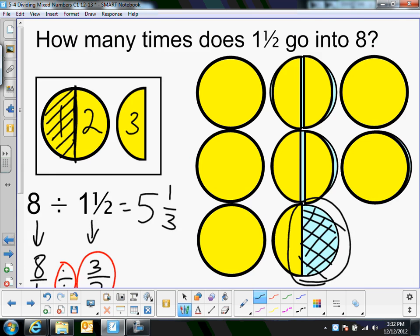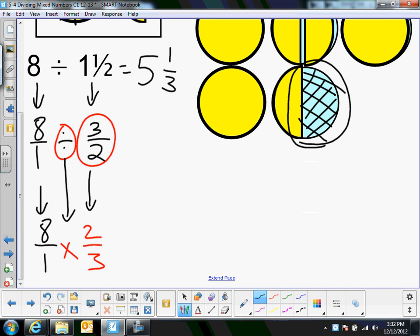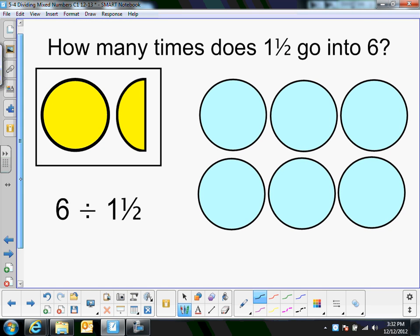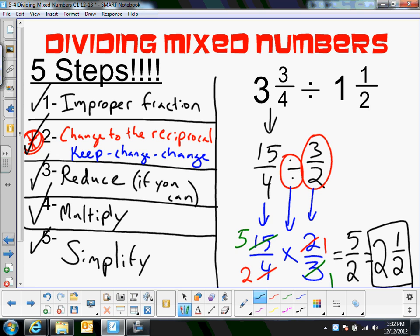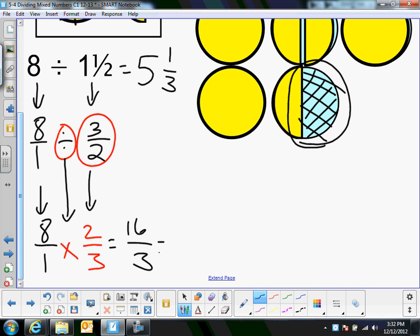Now, third step is reduce if you can. Nothing reduces. So that brings me to the fourth step, which is multiply. 8 times 2 is 16, and 1 times 3 is 3. So I've changed to improper fractions. I've kept, change, change. I've multiplied by the reciprocal. I couldn't reduce. I multiplied straight across. Now I just need to simplify it. 3 goes into 16 five times, and there's only one left over, because it's 3 times 5 is 15. So it's 5 and 1 third, and you can see how it's the exact same answer I got before with my picture.